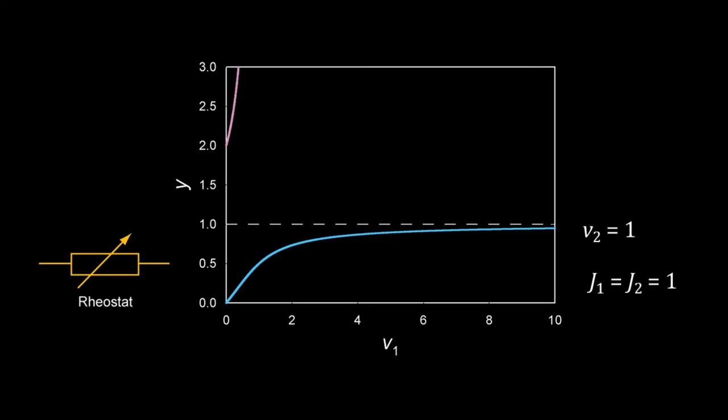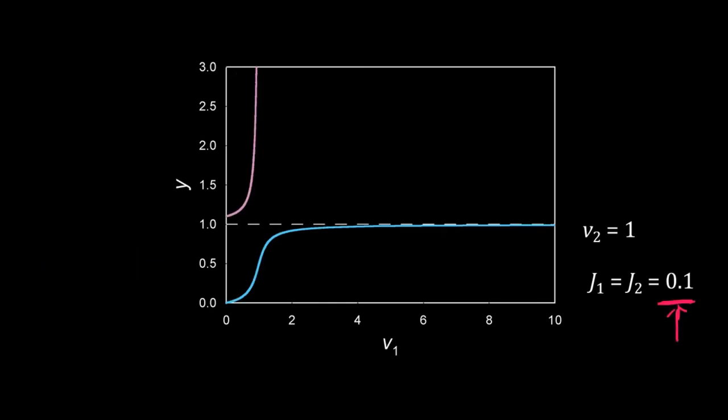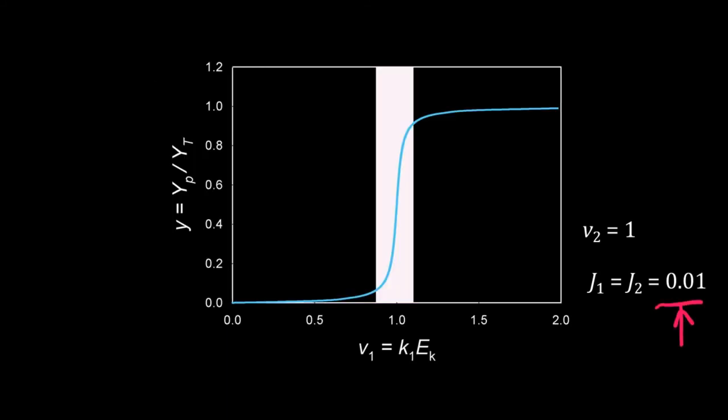When j1 and j2 both are smaller than one, this blue curve is sigmoidal. j1 and j2 are the ratios of Michaelis-Menten constant to total Y. When total Y is much bigger than the Michaelis-Menten constant, the switch has a sigmoidal behavior. When j1 and j2 are much smaller than one, this sigmoid becomes very sharp.